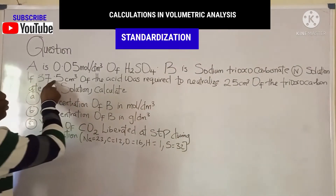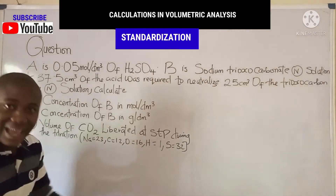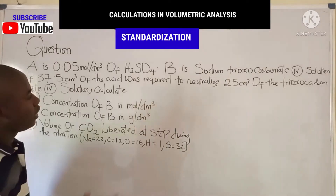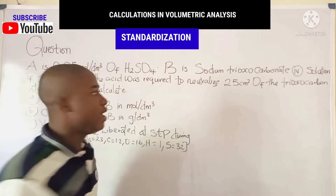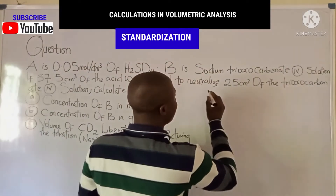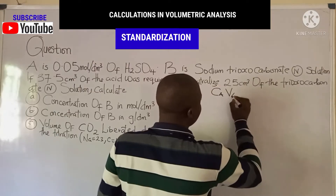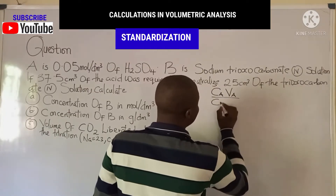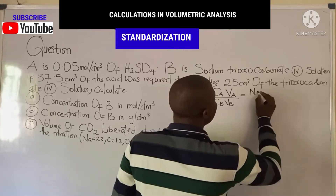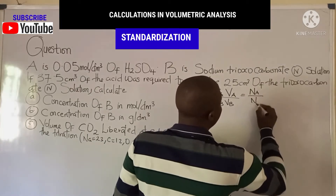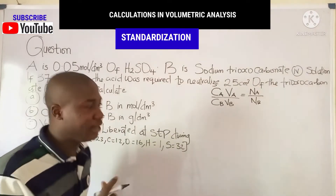This value of 37.5 cm³ is the endpoint of the titration. First, we need some important formulas. The key formula is: CaVa over CbVb equals na over nb. This equation is very important.